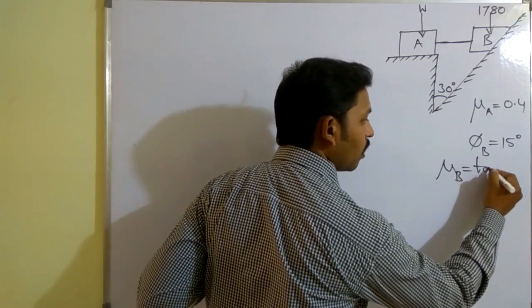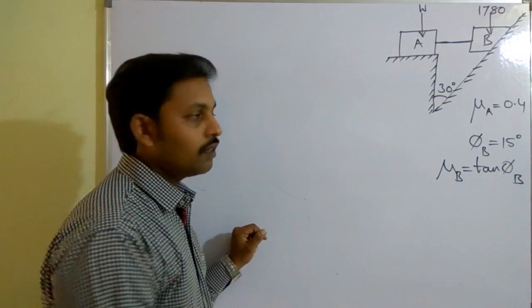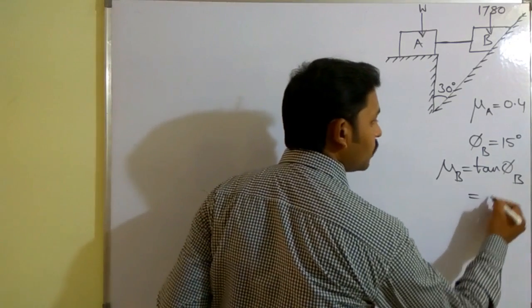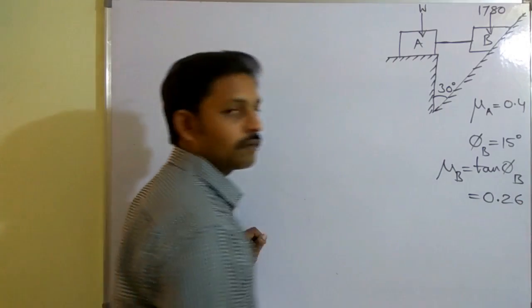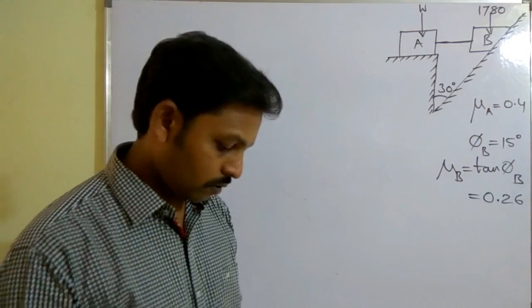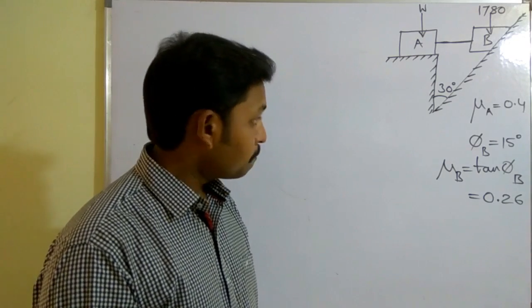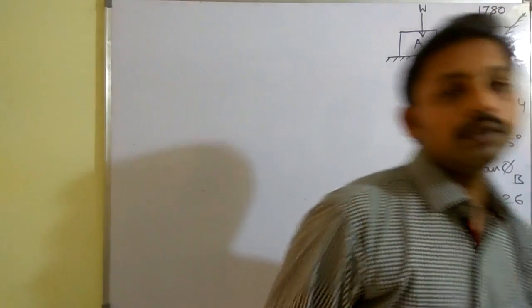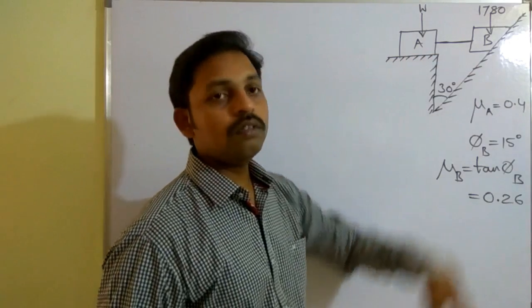The relation between coefficient of friction and angle of friction is μ = tan(φ). From that, μ_b = tan(15°), which is equal to 0.26.